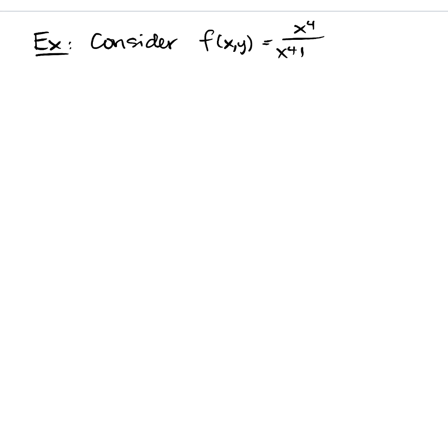All right. Let's consider a second example, which illustrates something a little more sinister. So the second and final example in this intro to 14, 2 starts out quite the same. We're going to consider a function of two variables here. This time the function is x to the fourth over x to the fourth plus y squared.